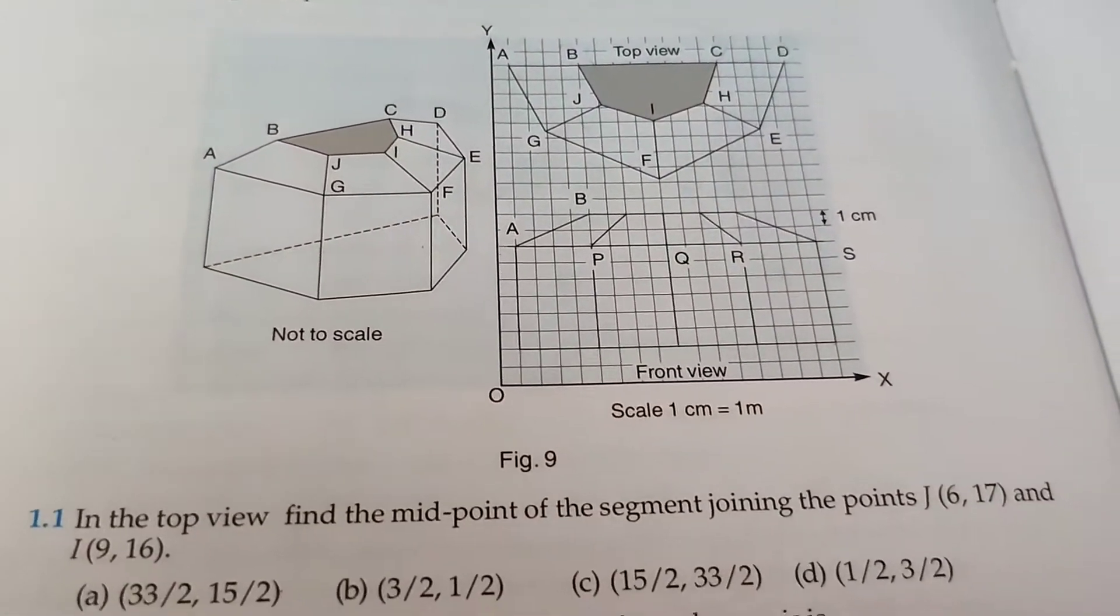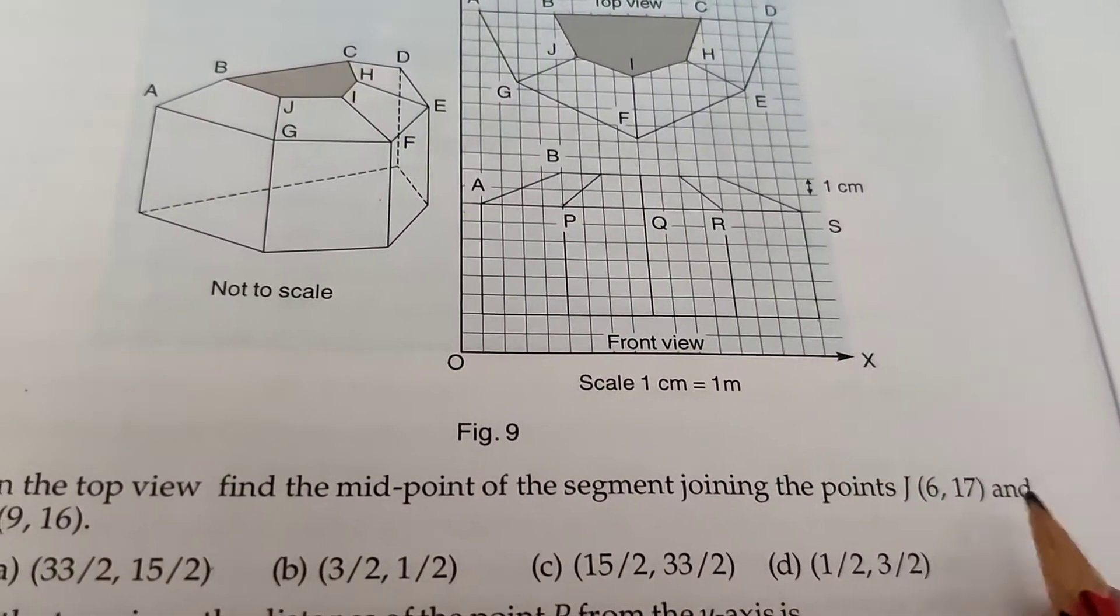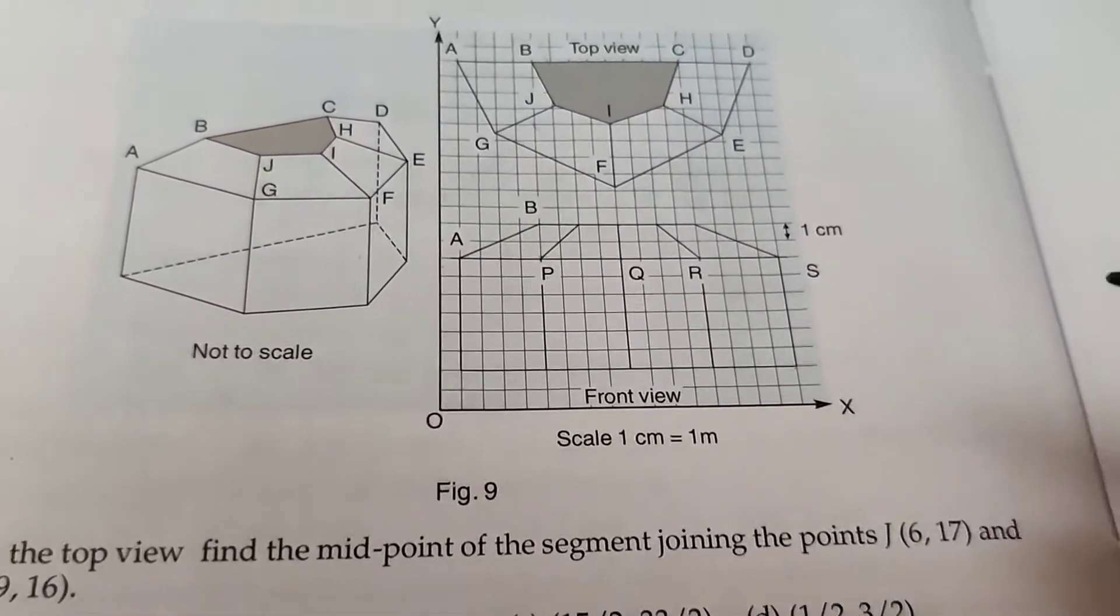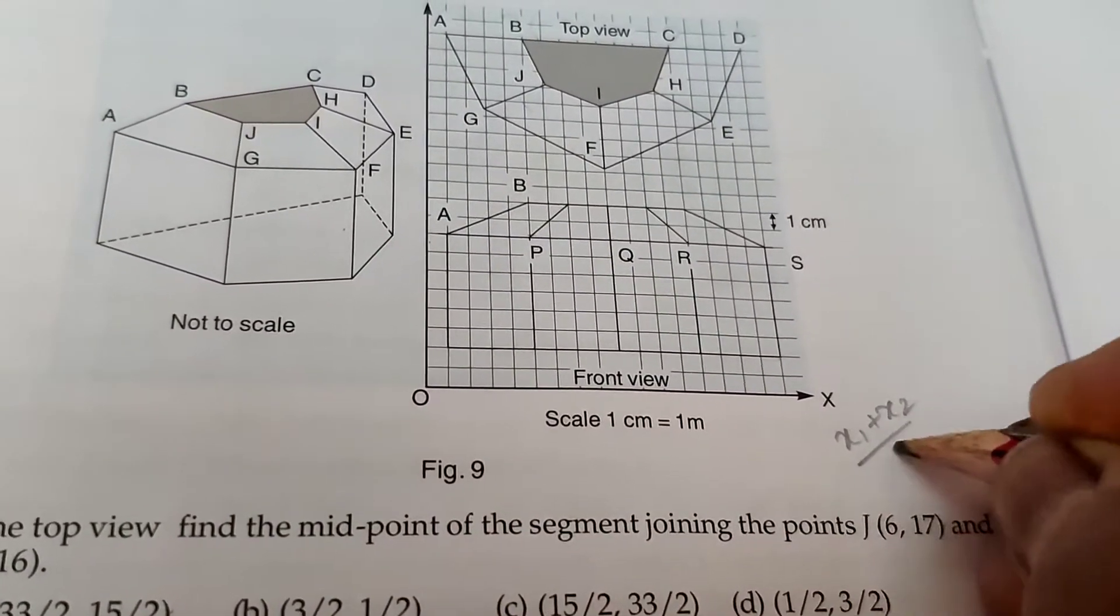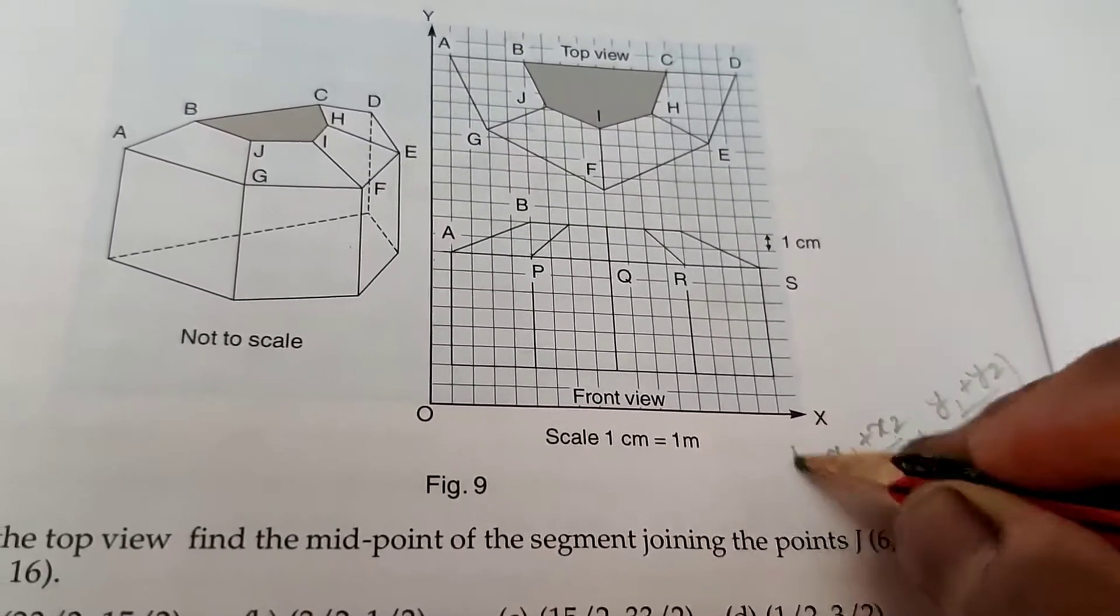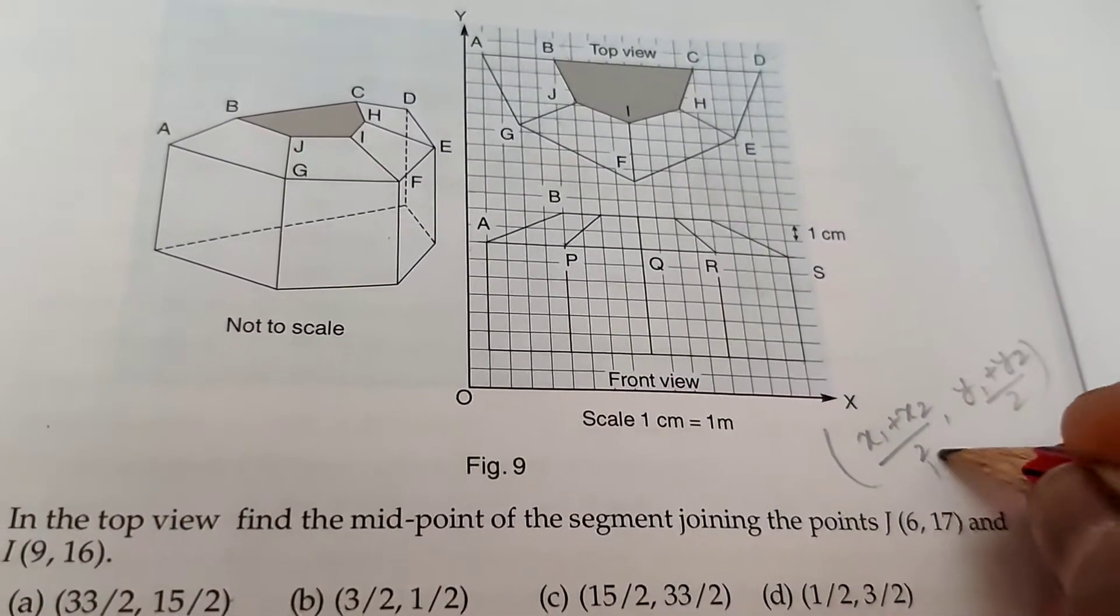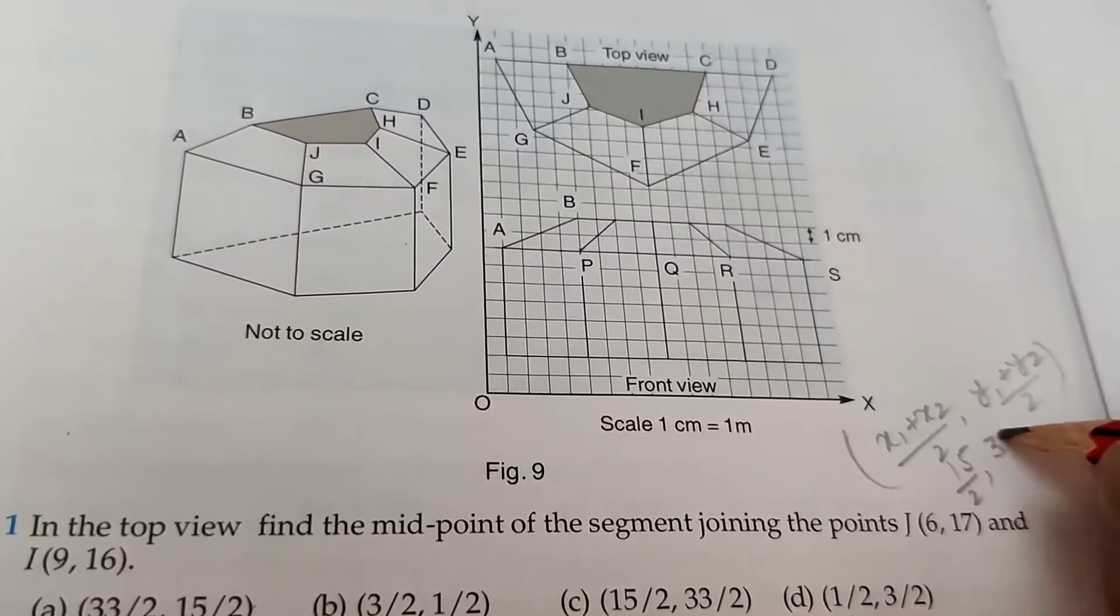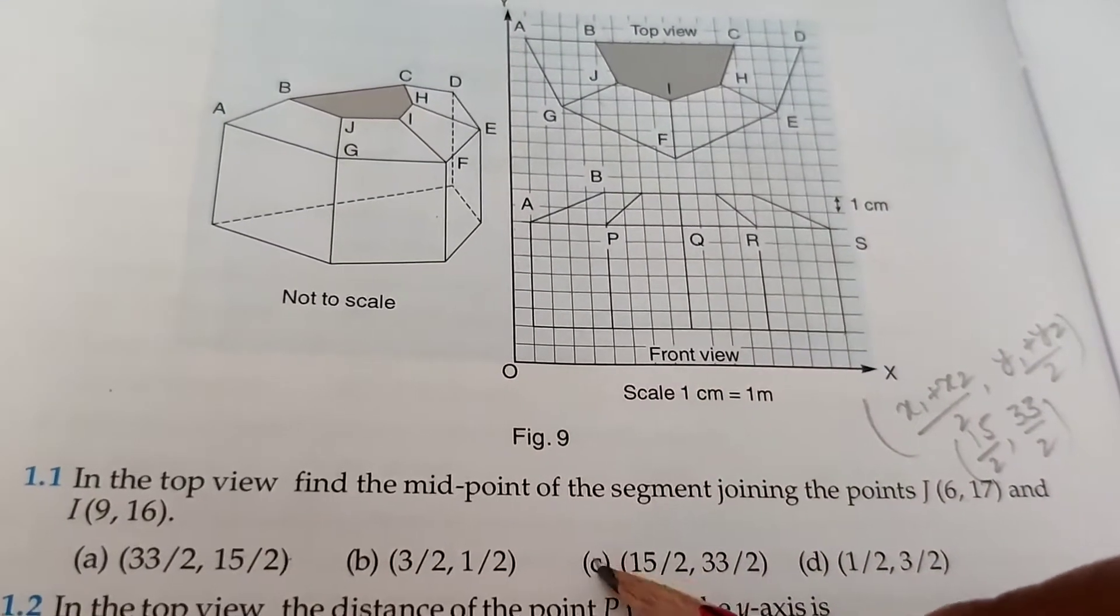Now question number one: In the top view, find the midpoint of the segment joining the points (6,17) and (9,16). We know the formula of midpoint: x1 plus x2 by 2 and y1 plus y2 by 2. So 6 plus 9 is 15 by 2, and 17 plus 16 is 33 by 2. These are the coordinates of the midpoint: 15/2 and 33/2.